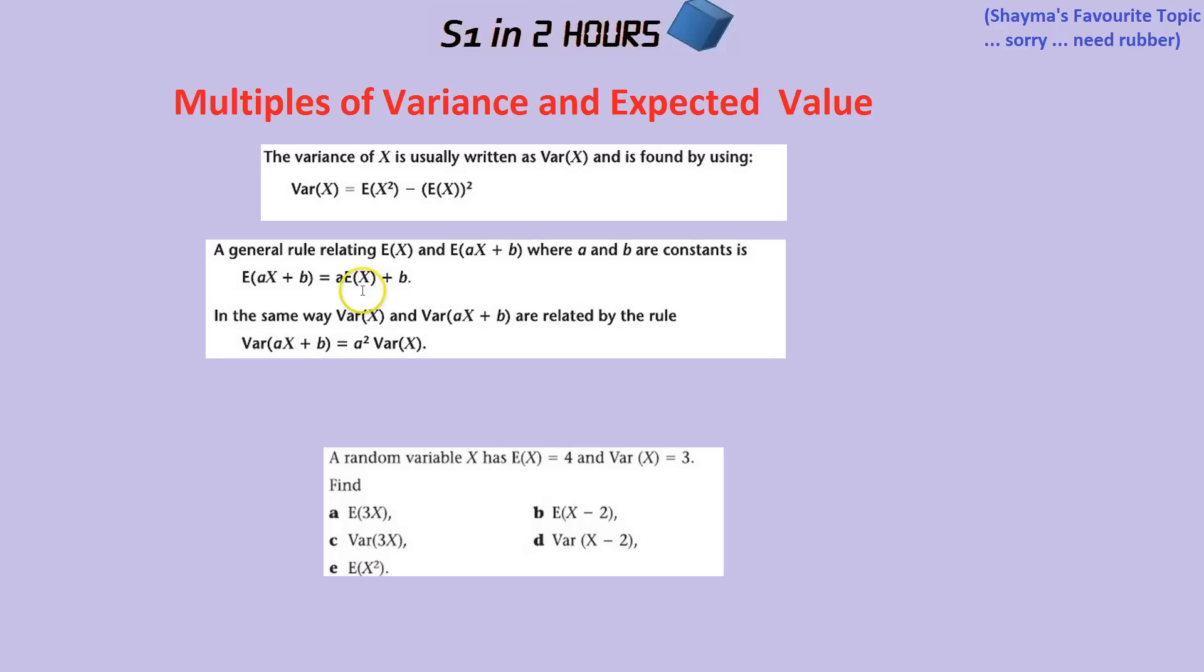For expected value, E of X, if there's a multiple you simply multiply the expected value. If there's an addition or a minus, you simply add or minus that number. Variance is a bit different. Variance is a measure of spread, not so much an expected value. If you moved all the values up by a number like 10, that wouldn't actually change how spread out the values are, it would simply just move them all up by 10.